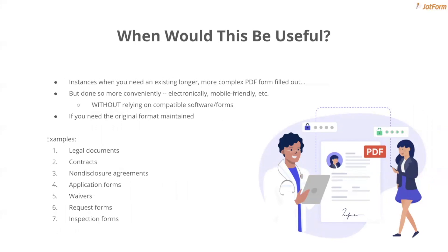This can be useful in a lot of ways. It's really the kind of thing you might not even realize you need until you have it, especially when it comes to longer, more complex PDFs that can be a pain to fill out electronically or to scan through on your phone. This turns them into a user-friendly online form for people to fill out wherever and whenever on whatever device, and then it retains that original format, which can be important for record keeping. Examples of where this tool might come in handy include legal documents, contracts, non-disclosure agreements, application forms, waivers, request forms, inspection forms, and more. A lot of these might be intricate or specifically formatted pre-existing documents that your organization relies on, but you still need to get them filled out electronically. Our goal with JotForm Smart PDF Forms was to make that process a little easier for you.